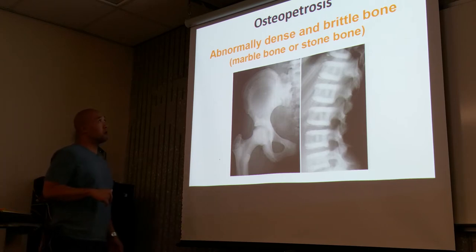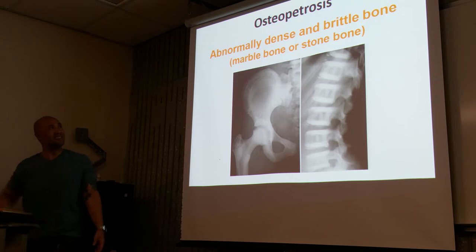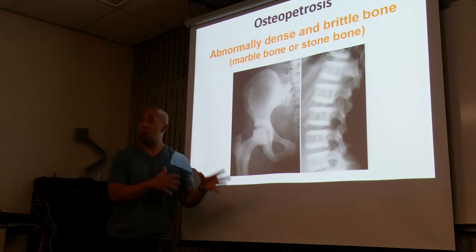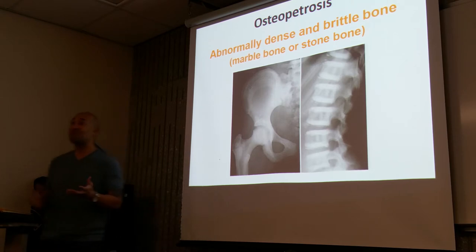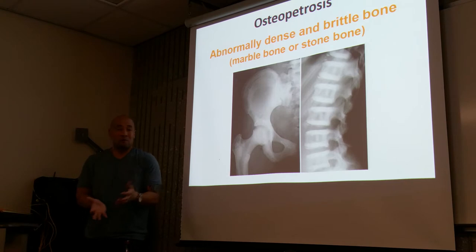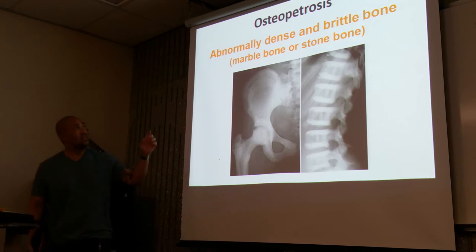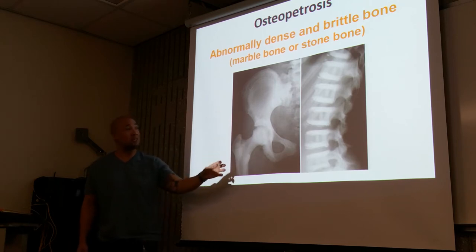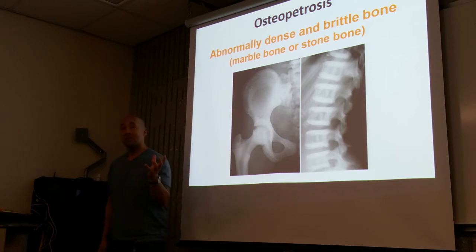Osteopetrosis — also known as brittle bone or marble bone. There's an overproduction of bone, almost like glass — brittle. You can just bump a bone and break it; it's like bone china. It's marble bone or stone bone, and the bone appears solidly white — very dense and very white.